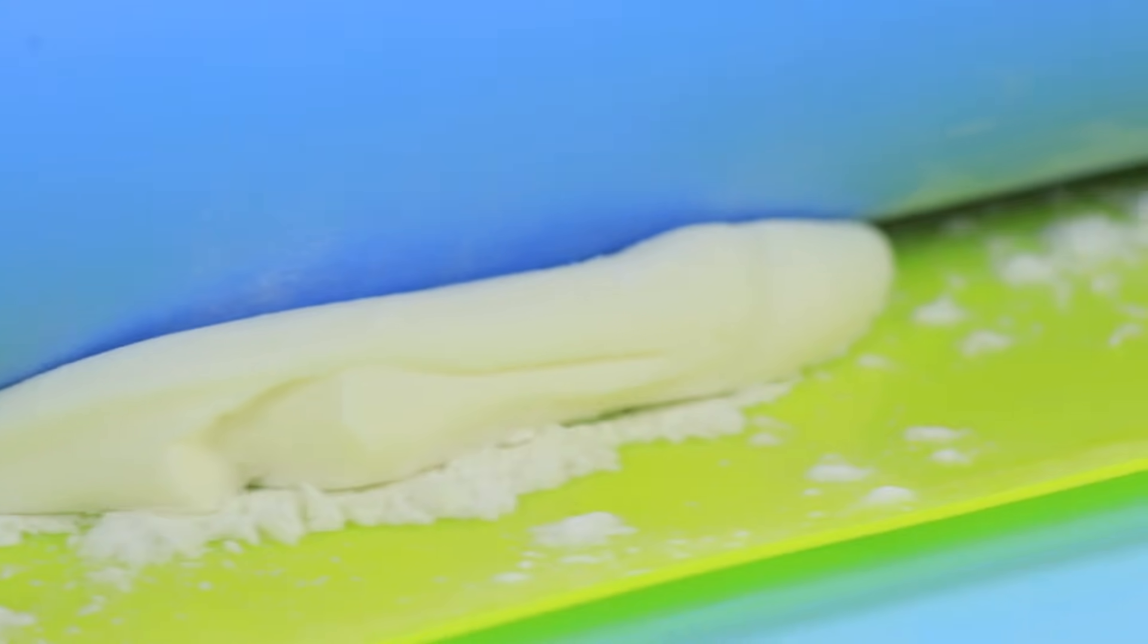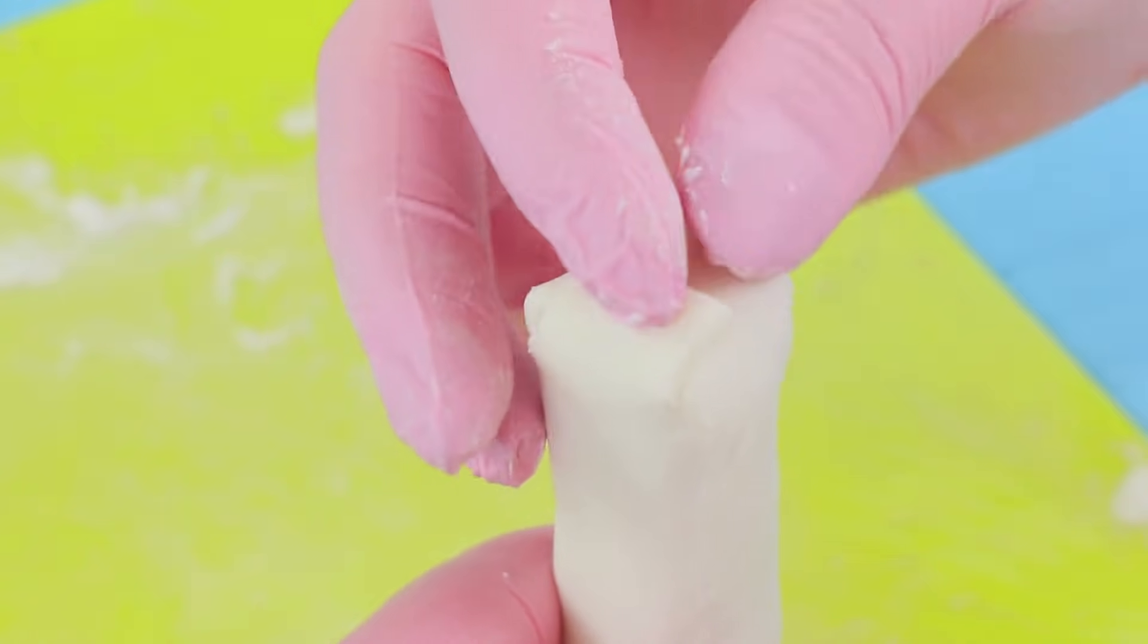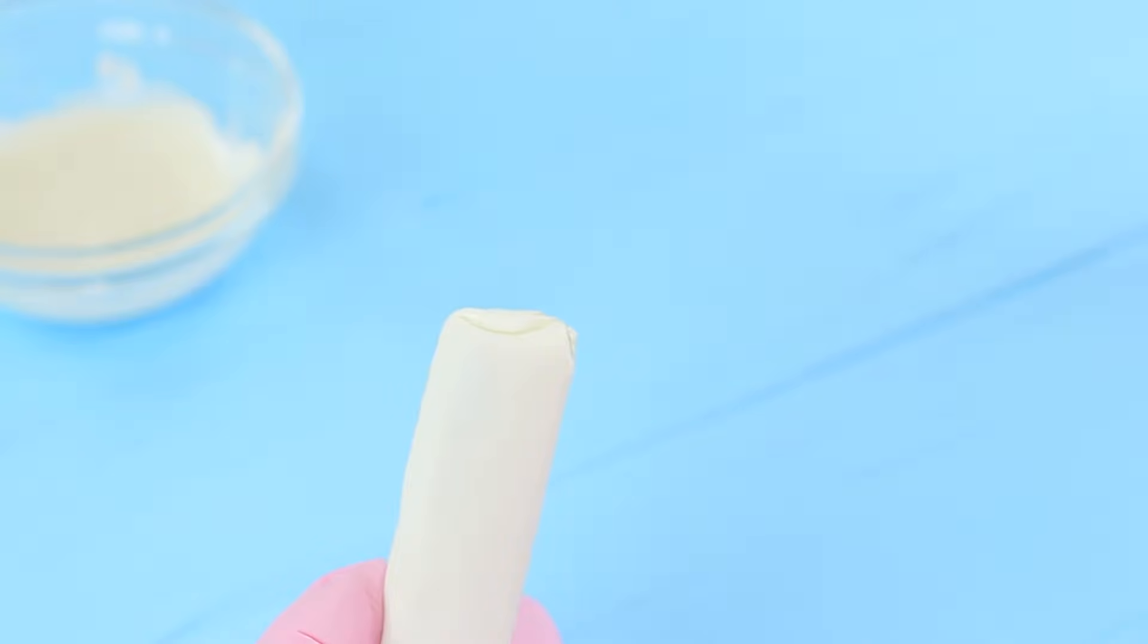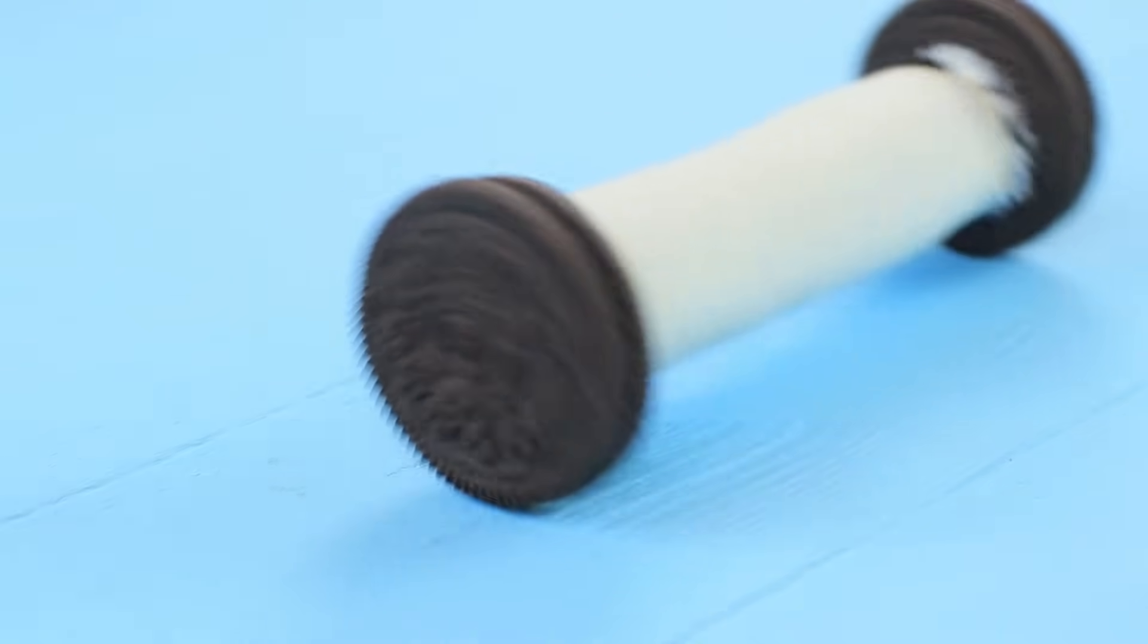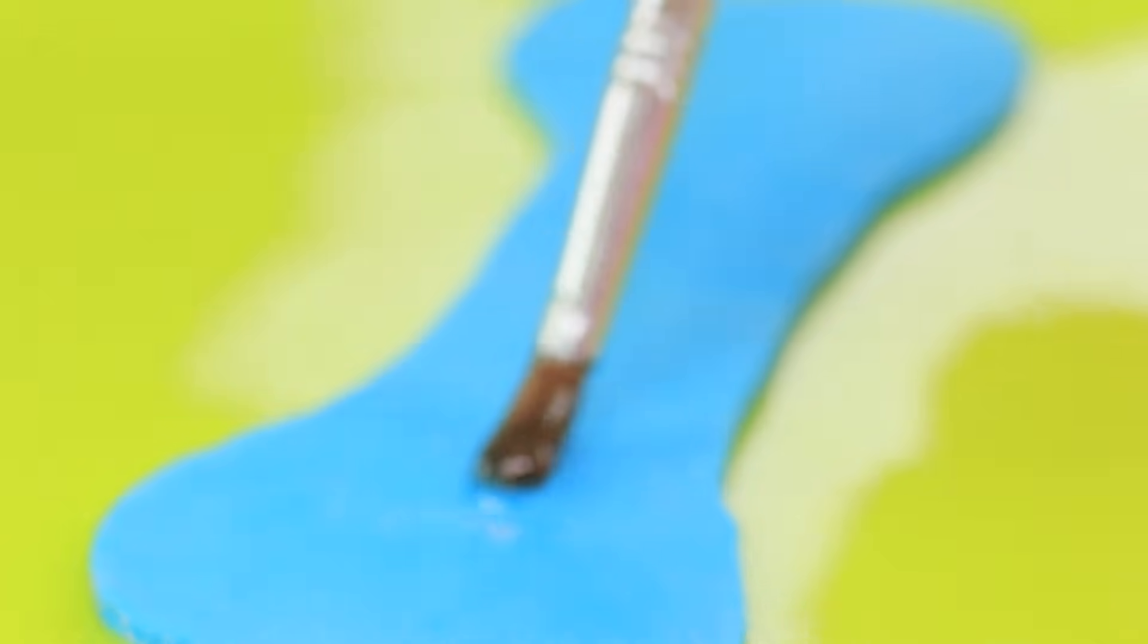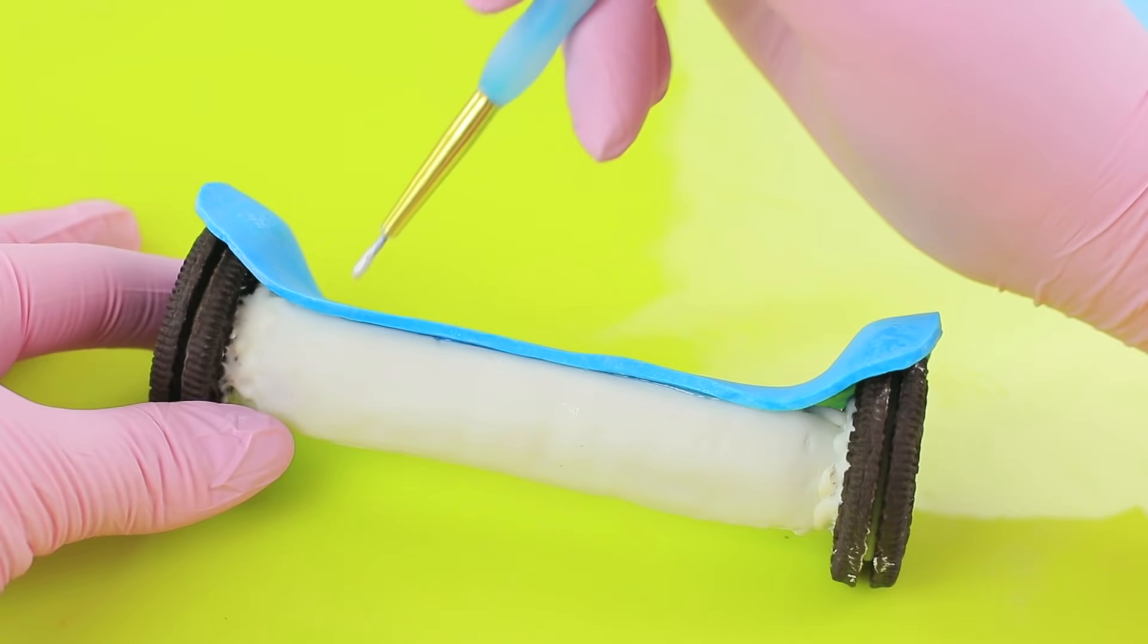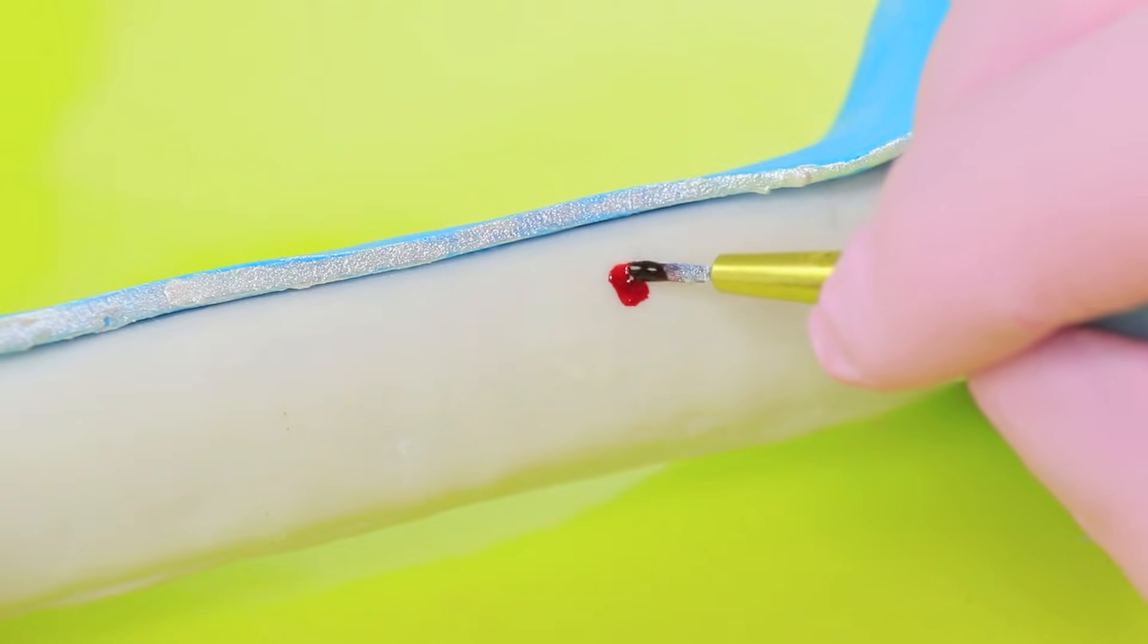Roll white fondant out to make a thin layer. Wrap Twix in it. Melt white glaze and cover the side of the base with it. Attach an Oreo cookie. This will be a wheel of your hoverboard. Cut a footboard out of blue fondant. Attach it with edible glue. Cover the edges with silver food coloring. Paint lights with food colorings.